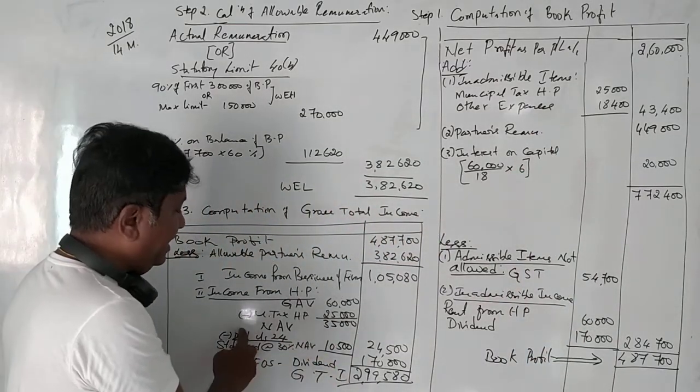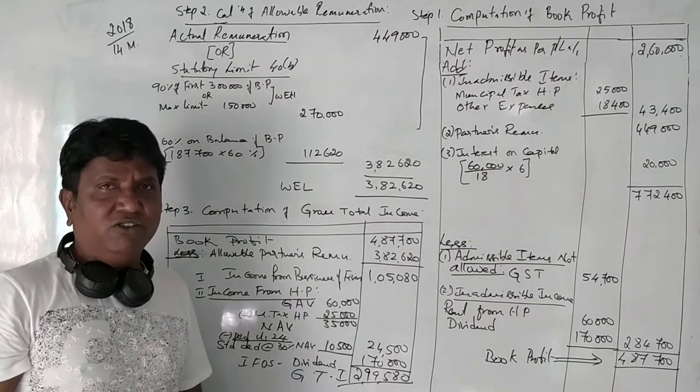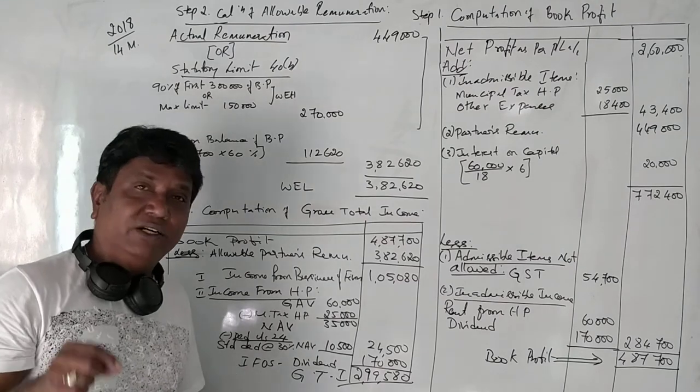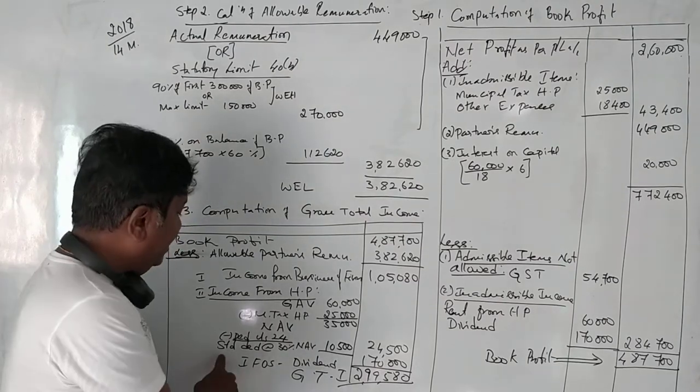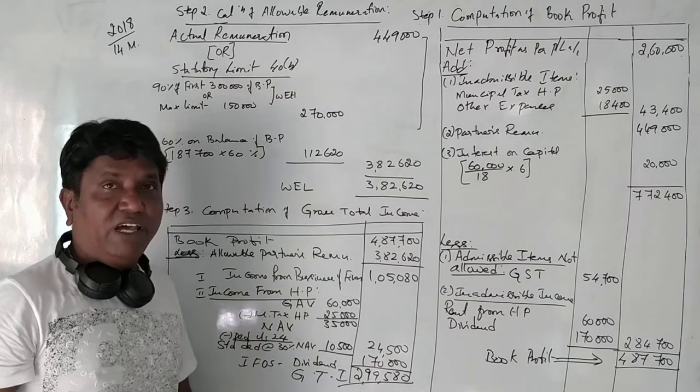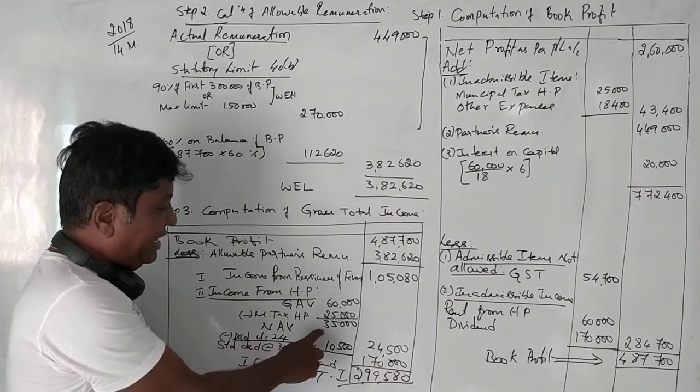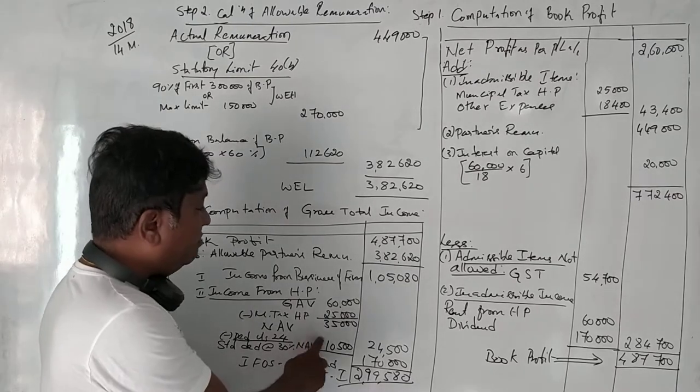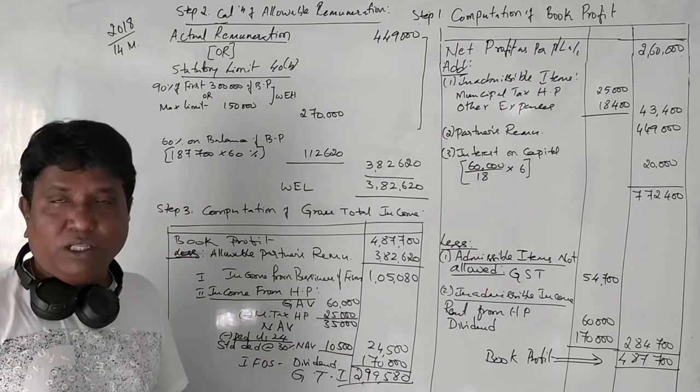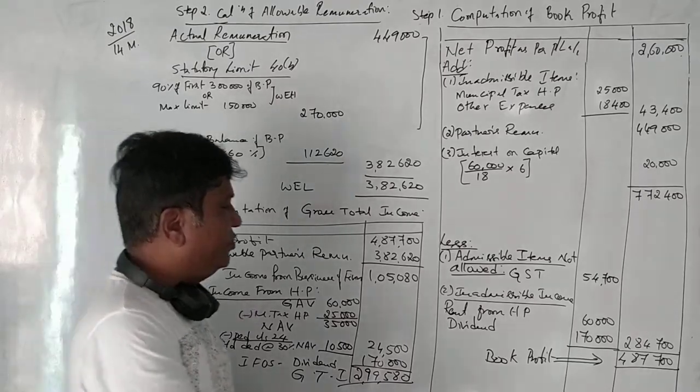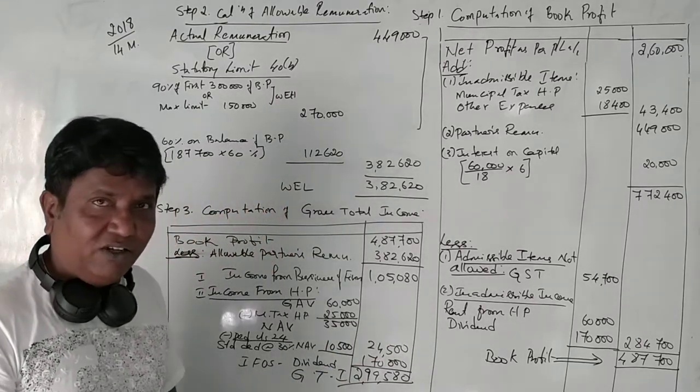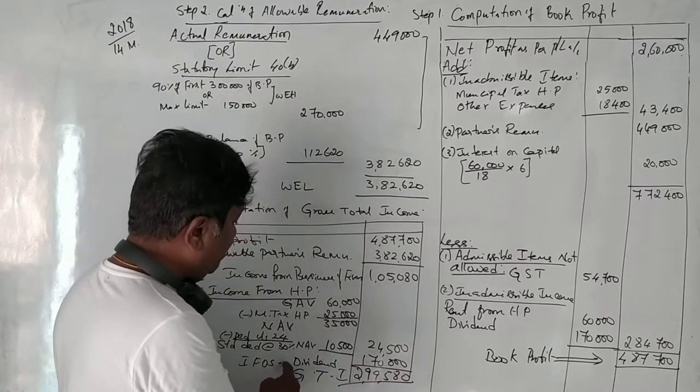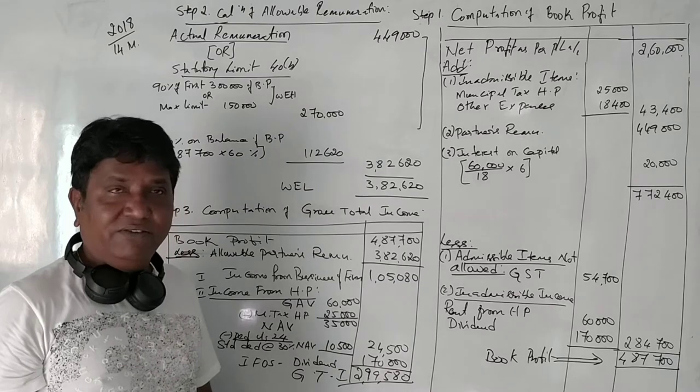We got a net annual value as 35,000. On this net annual value, we give deduction under section 24 as standard deduction 30% on the net annual value. On 35,000, 30% is 10,500. And the income from house property is 24,500. Since we assume the dividend 1,70,000 is received from a foreign company and taxed completely, income from other sources dividend is 1,70,000.